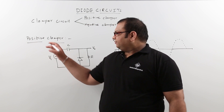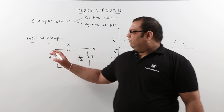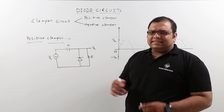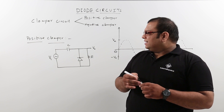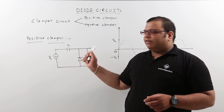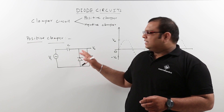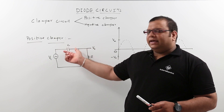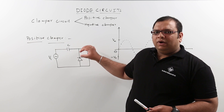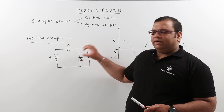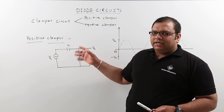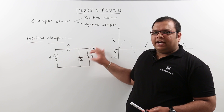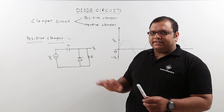In the positive clamper, we will use a diode, capacitor circuit. It is the same as a half-wave rectifier, but the only difference is: in a half-wave rectifier, the diode is placed in series and the output is taken across the capacitor. But in this clamper circuit, we will take the output across the diode — that is the only difference.